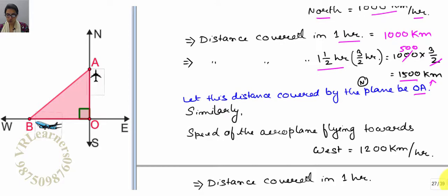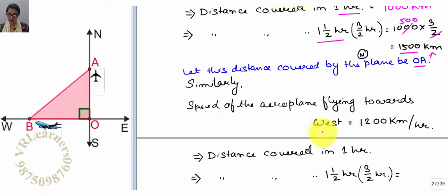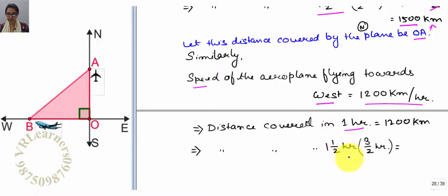Similarly the flight west is given that speed is 1200 km per hour. This means 1 hour the flight west will cover 1200 km. So we can find that one and half hour this flight distance cover, that is 1200 km into...